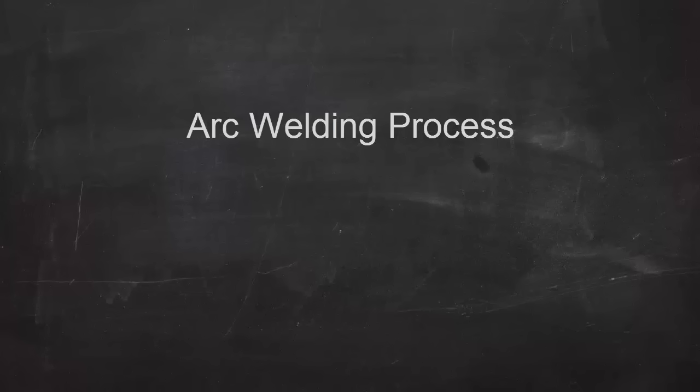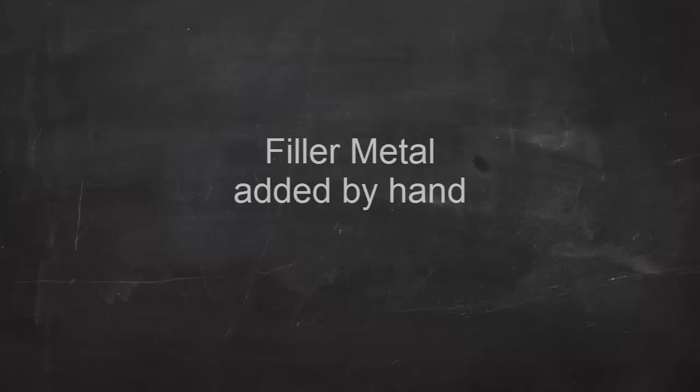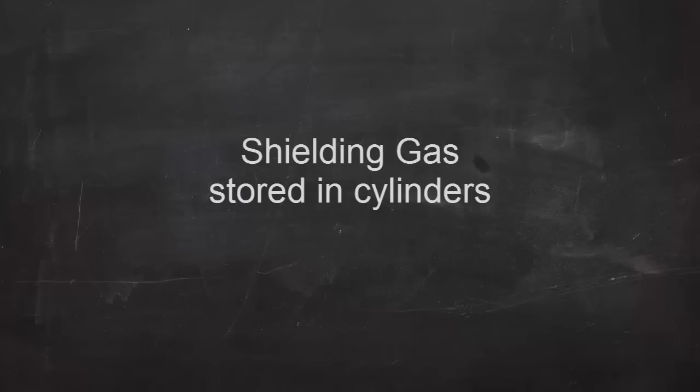So in summary, TIG welding is an electric arc welding process. It uses a non-consumable tungsten electrode. The filler metal is added separately in the form of filler rod. And the shielding gas comes from a high pressure cylinder.